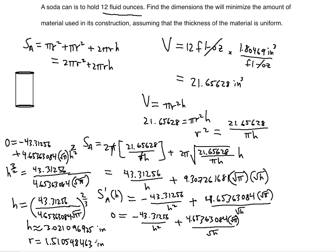These are the dimensions. Note that when you take height values less than 3.02 and plug them into the derivative, you get a negative value — meaning the function is decreasing to the left. For height values greater than 3.02, such as 4, the derivative is positive — the function is increasing. This confirms by the first derivative test that h equals 3.021 inches is indeed the minimum. Thanks for watching — please subscribe and see you in the next video.